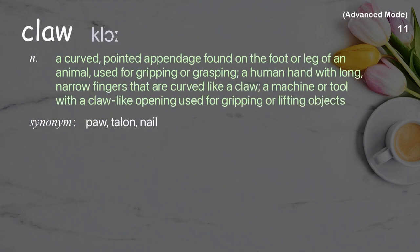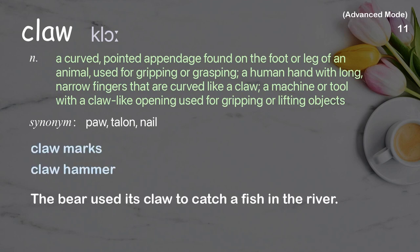Claw: a curved, pointed appendage found on the foot or leg of an animal, used for gripping or grasping; a human hand with long narrow fingers that are curved like a claw; a machine or tool with a claw-like opening used for gripping or lifting objects. Examples: claw marks, claw hammer. The bear used its claw to catch a fish in the river.